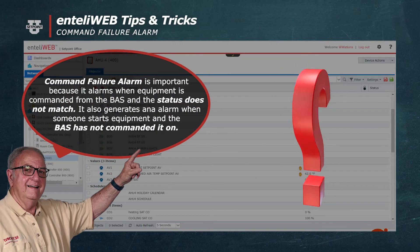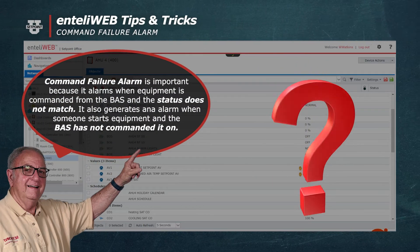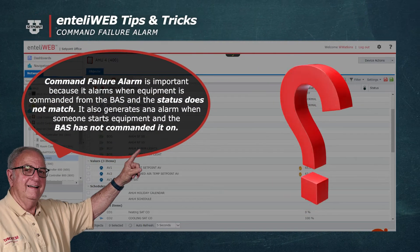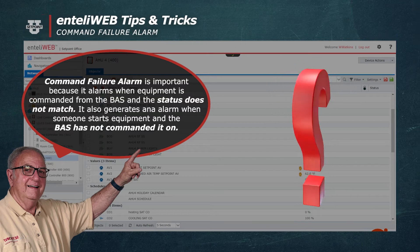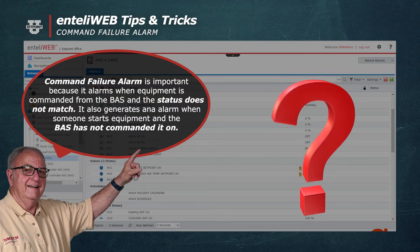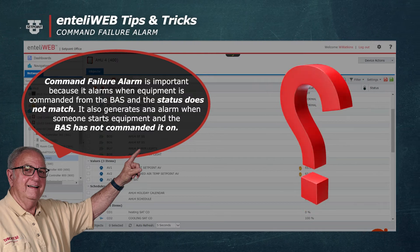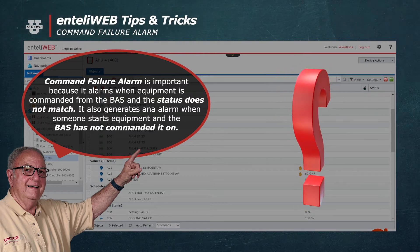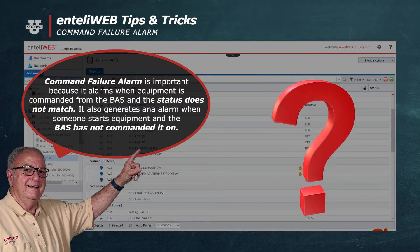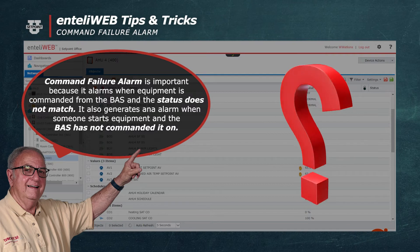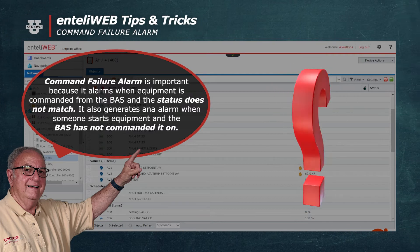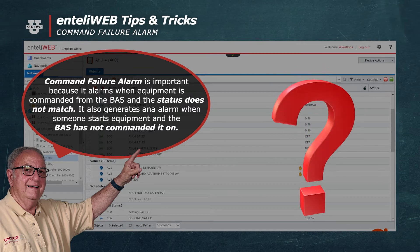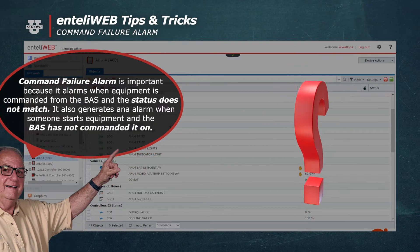Command failure alarm is important because it alarms when the equipment is commanded from the building automation system and the status does not match. It also generates an alarm when someone starts the equipment and the BAS has not commanded it on.